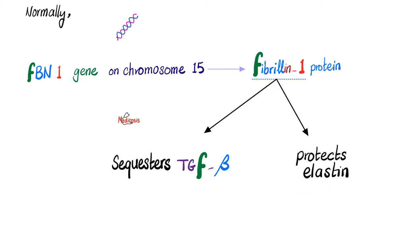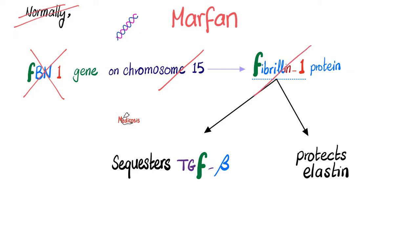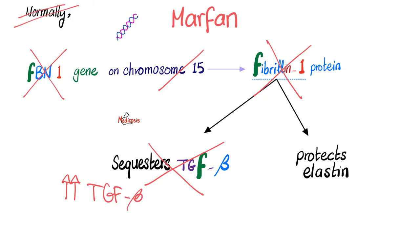In Marfan syndrome, there is a problem in the FBN1 gene on chromosome 15, which means fibrillin-1 is lost. This means we cannot keep TGF-beta in check, so the level of TGF-beta goes up. And without fibrillin-1, we cannot protect elastin, resulting in an elastin defect — that's why it's called a connective tissue disorder.